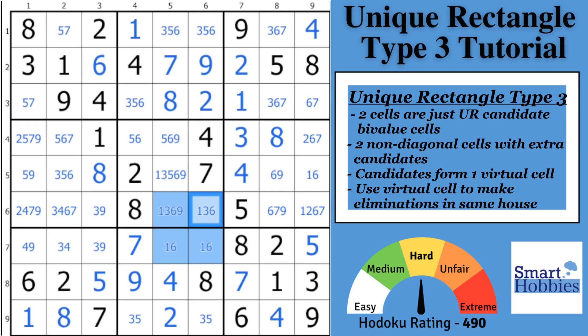The way you know it is a unique rectangle type 3 is to scan now in the block and in the row. You're looking for another cell that contains a 3-9, and there's one right there. So what you notice is the two additional candidates are 3-9. Two different candidates. Here's a 3-9 cell right there.